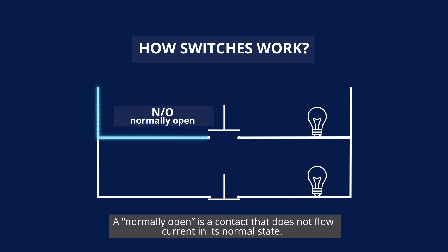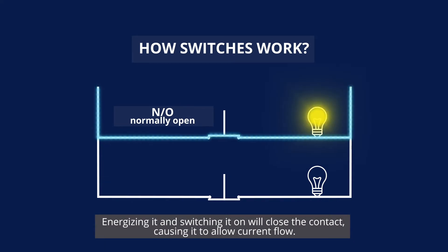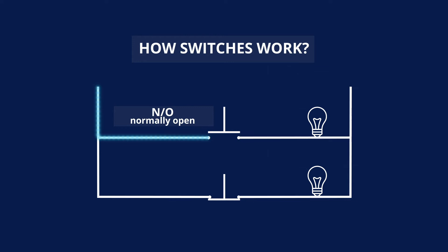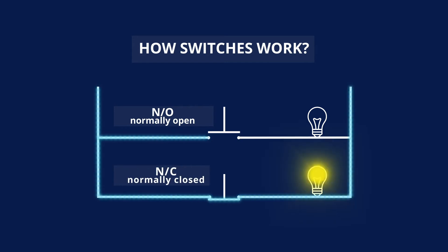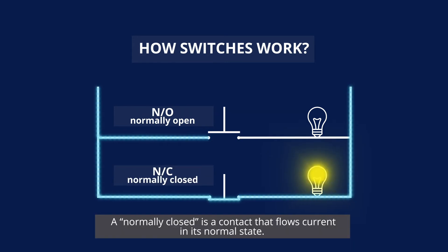A normally open contact does not flow current in its normal state. Energizing it and switching it on will close the contact, causing it to allow current flow. A normally closed contact flows current in its normal state.